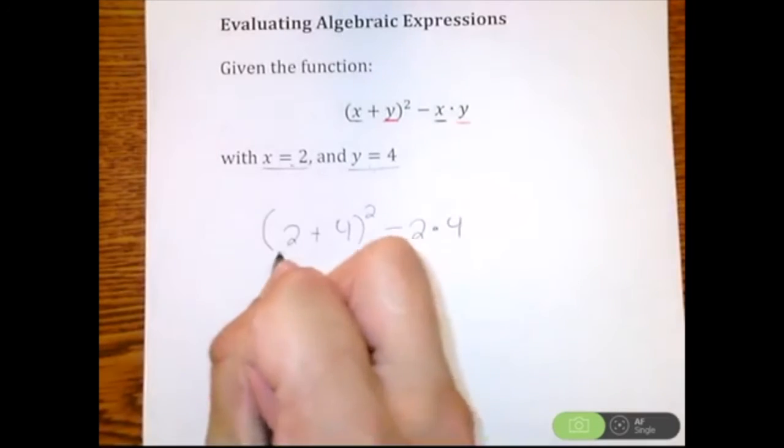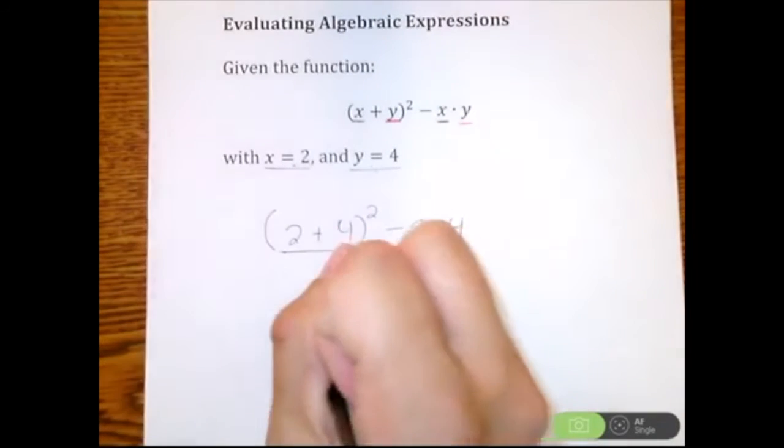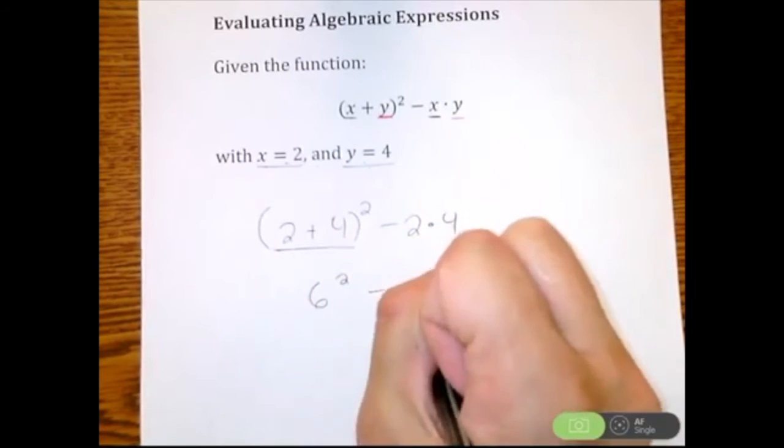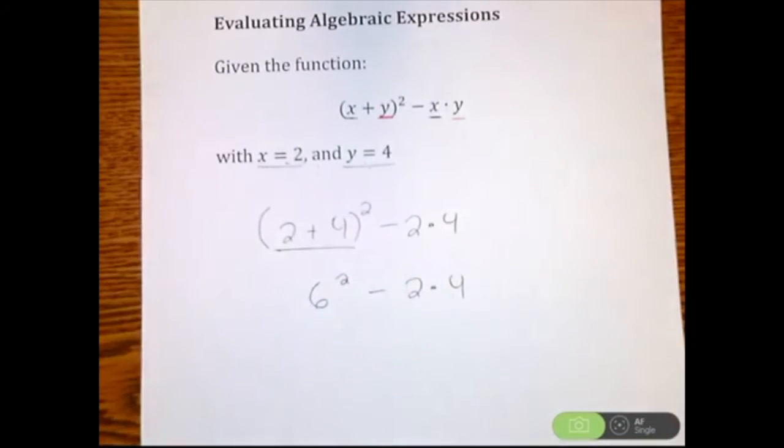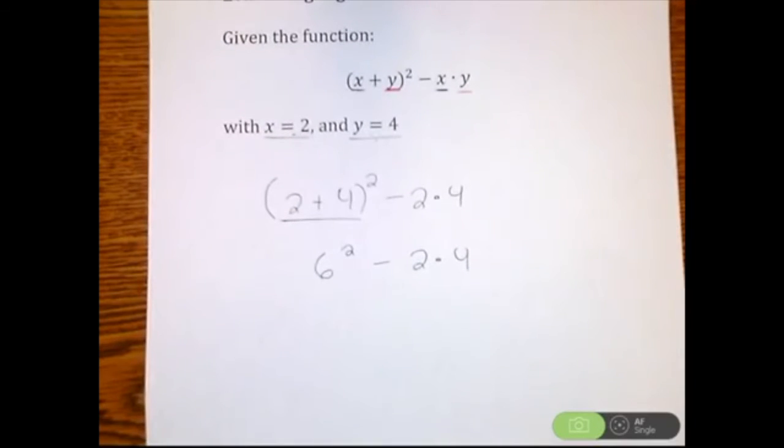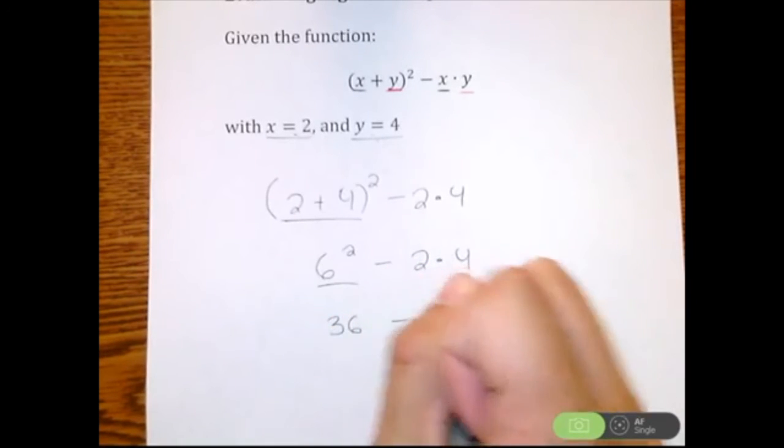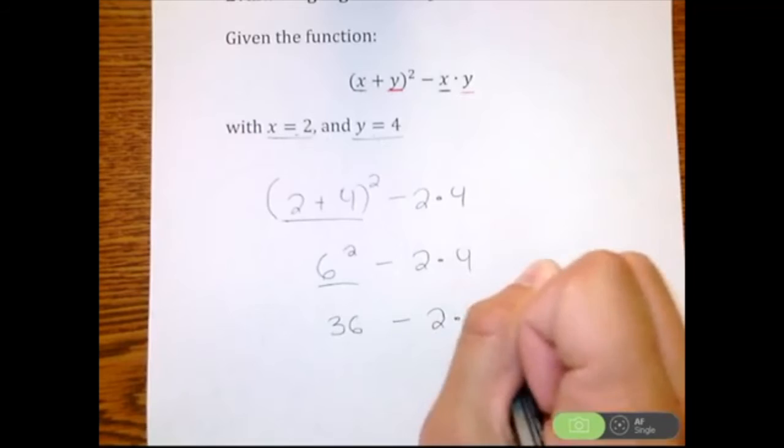So parentheses first. So I see 2 plus 4, which is 6. Still haven't touched the square, the minus, the 2, the multiplication, or the 4. Now moving on, I would look at the next order would be the exponents here. So 6 squared, which is 36. Didn't touch the minus, the 2, the multiplication, or the 4.